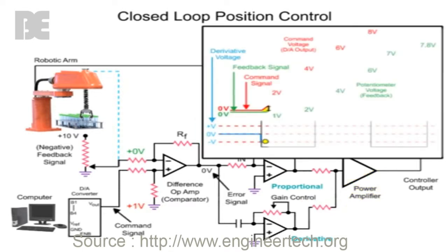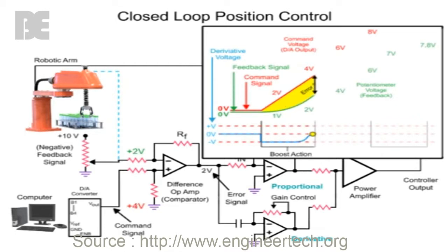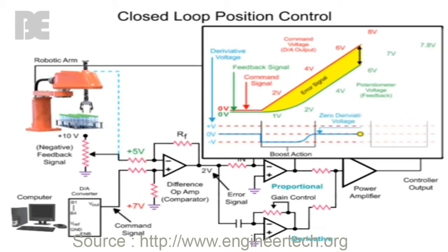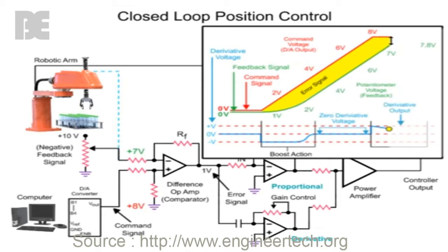The error becomes constant when the potentiometer indicates that the robotic arm's position is changing at a constant rate of the command signal. At this time, the derivative voltage changes to zero volts and the proportional amplifier continues to produce a voltage. As the command signal stops changing, the robotic arm continues to move with a decreasing error signal. As the error is reduced, the derivative amplifier output voltage changes polarity and cancels the proportional voltage. If the error signal decreases too fast, the derivative voltage will be greater than the proportional voltage, reversing the polarity of the power amp and creating a brake condition to prevent overshooting the desired position.